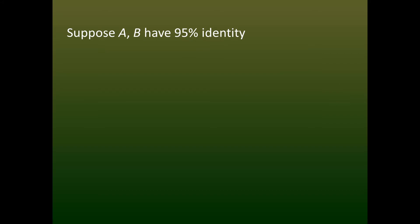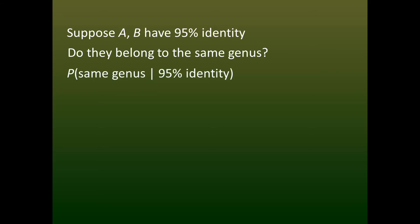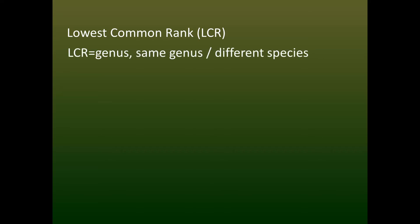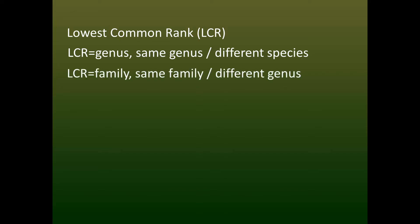Now let's approach the relationship between taxonomy and identity from a different direction. Suppose we have two sequences A and B which have 95% identity — do they belong to the same genus? If all we know is the identity, then we can't be sure. We can express the level of confidence as a probability that a pair of sequences belong to the same genus, given that they have 95% sequence identity. More generally, we can define the concept of a lowest common rank. If the LCR is genus, then the sequences belong to the same genus but different species. Similarly, if the LCR is family, then they belong to the same family but different genera.